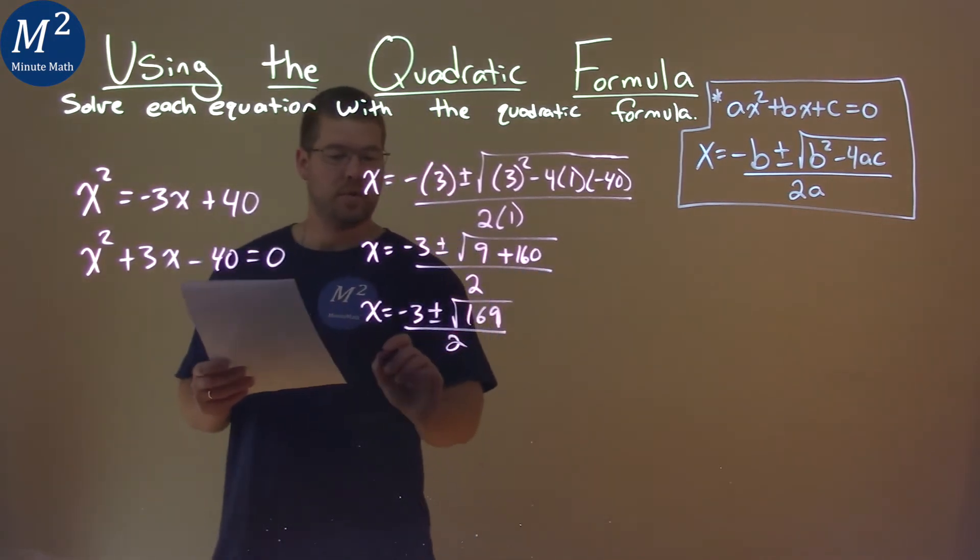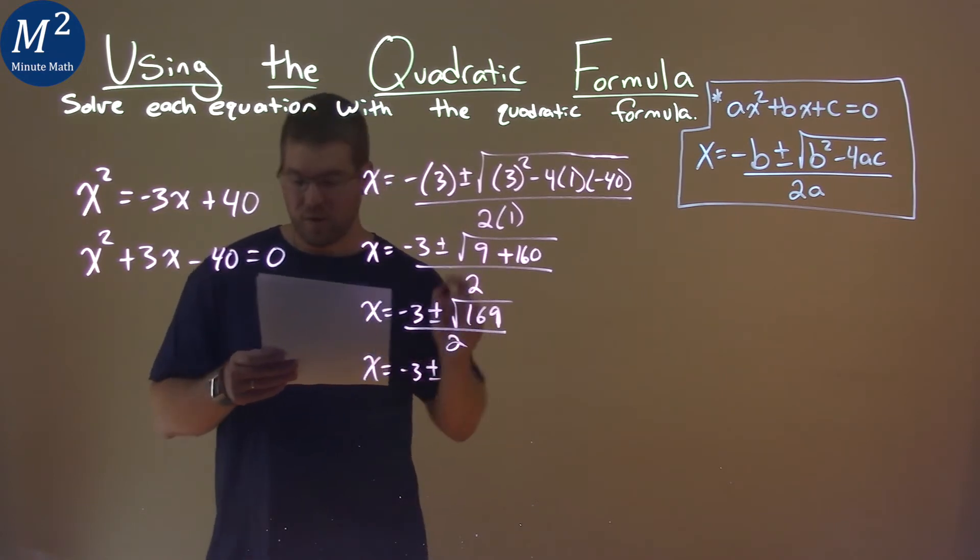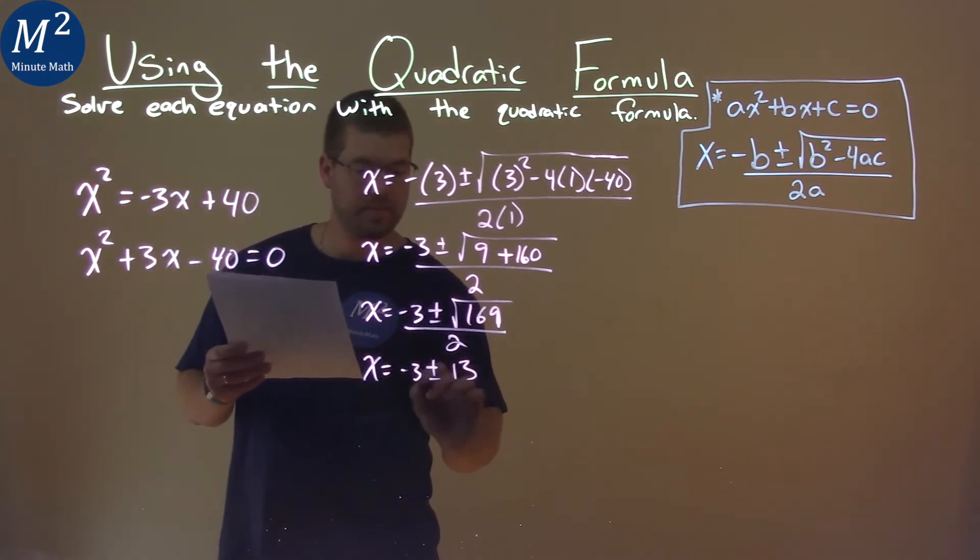Then, keep going. x equals negative 3, plus or minus. The square root of 169 is 13, over 2.